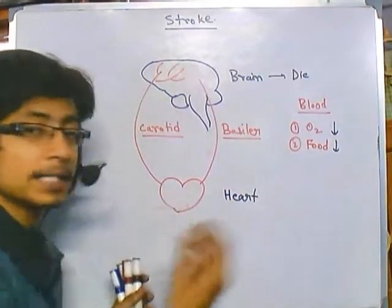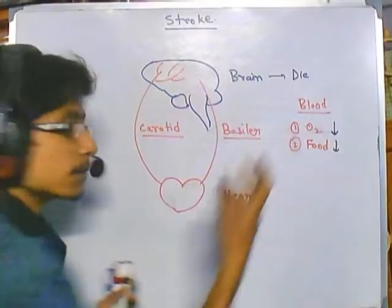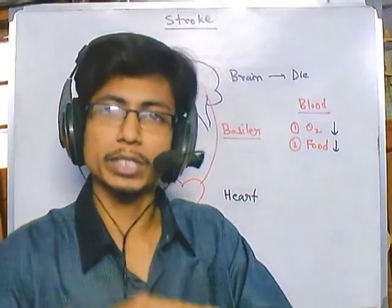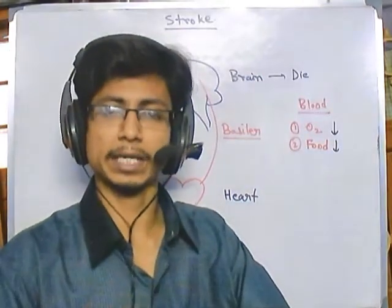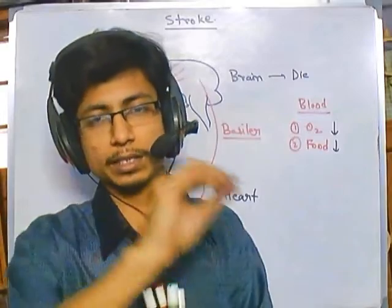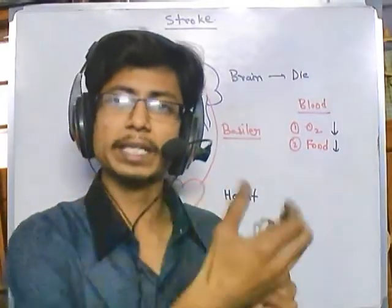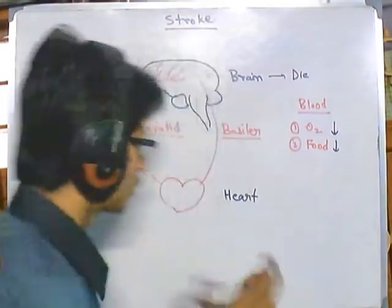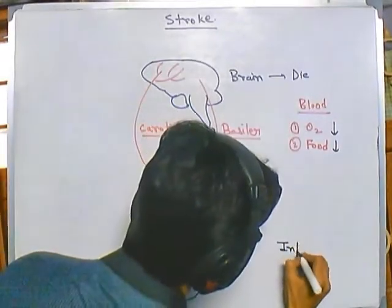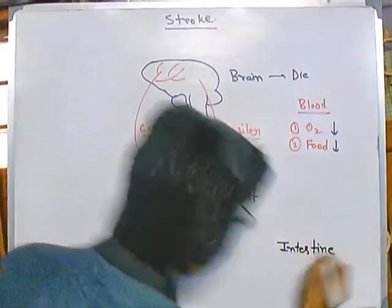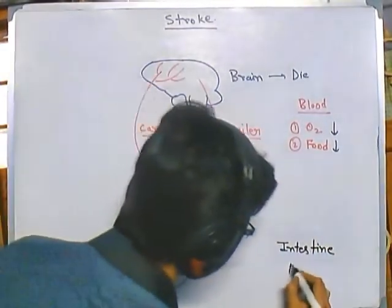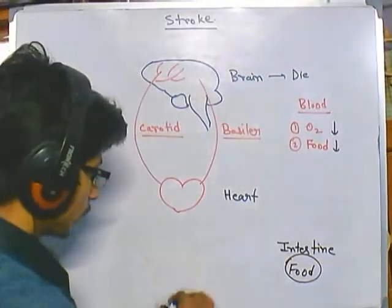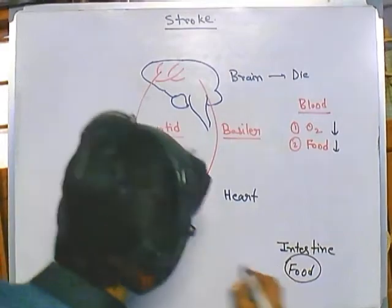The heart gets oxygen from the lungs, and the blood gets its food source from the intestine. When you digest food, it is broken down into smaller fragments and those fragments are absorbed in our intestine. All of this food material is then present in the blood. So food is absorbed from the intestine and the oxygen comes from the lungs.